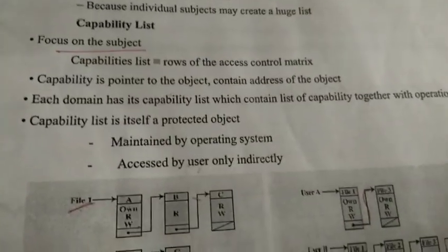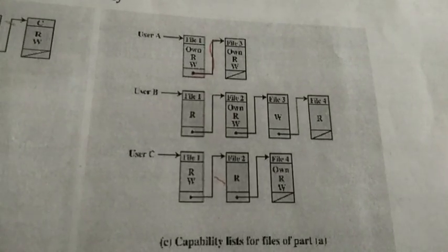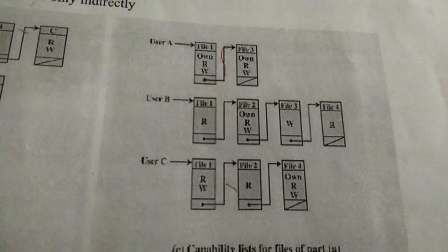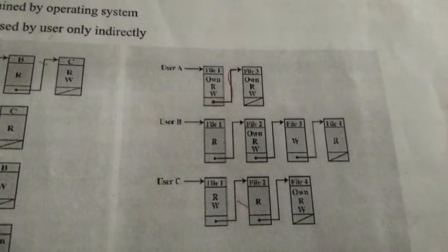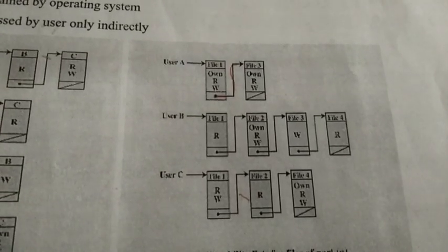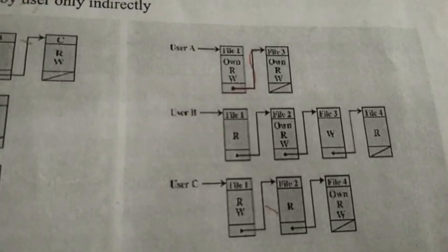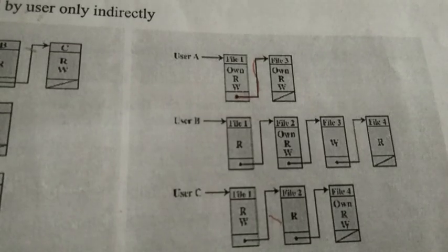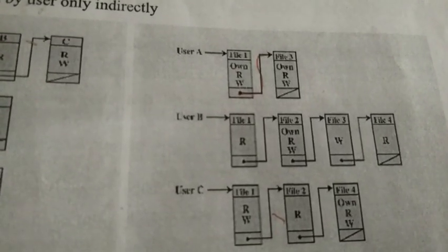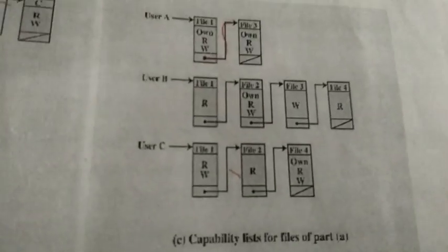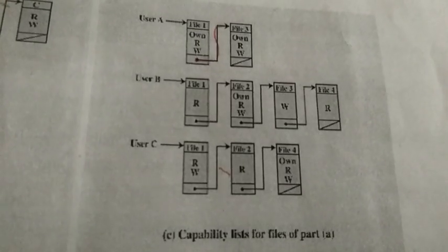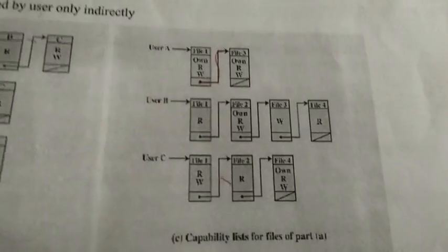The third method is capability list for subject. The capability list mainly focuses on the subject. For example, user A has access to files 1 and 3. User A is the owner of file 1 and can read and write file 1. User A is also the owner of file 3 and can read and write that file. In the second case, user B has access to file 4 and can only read file 4.